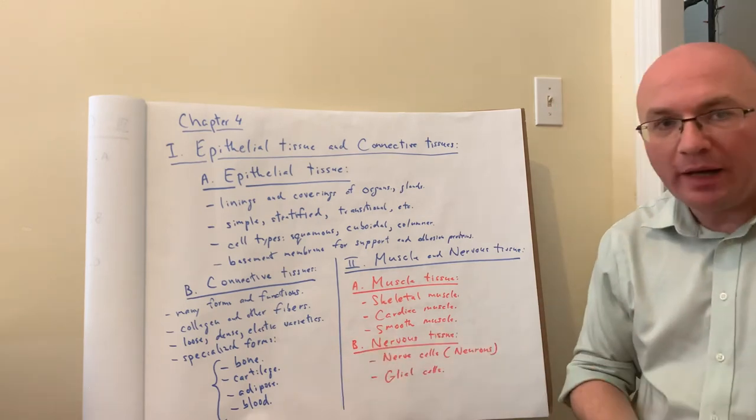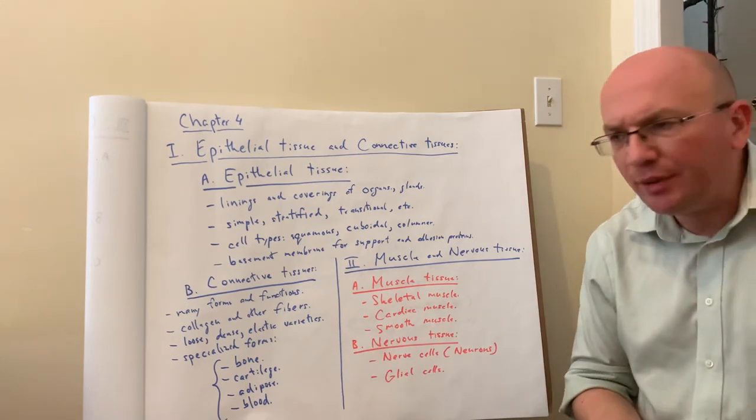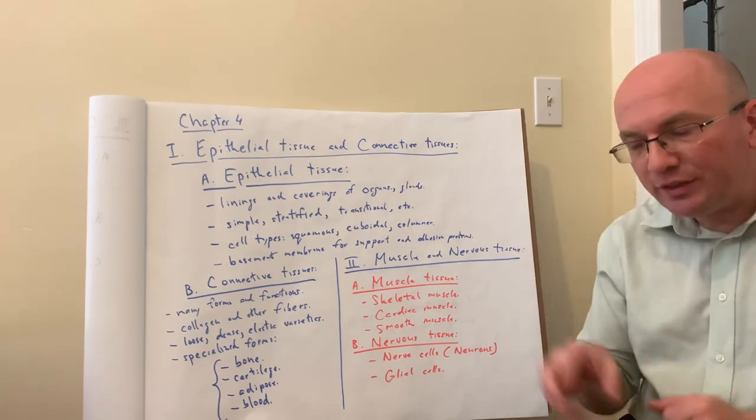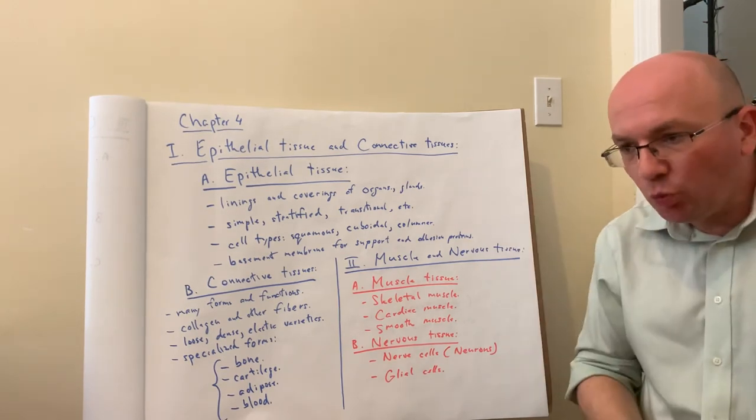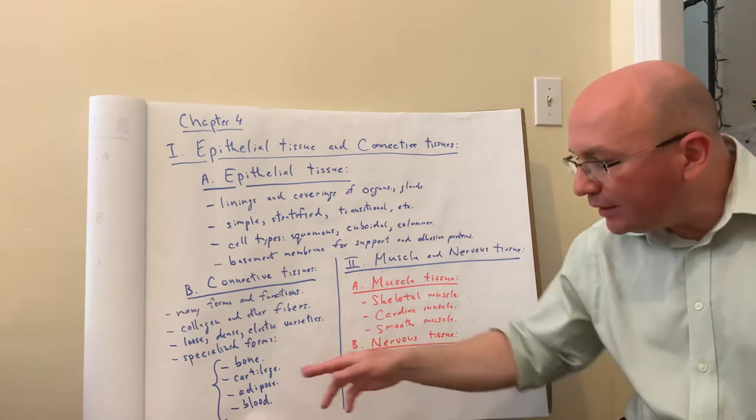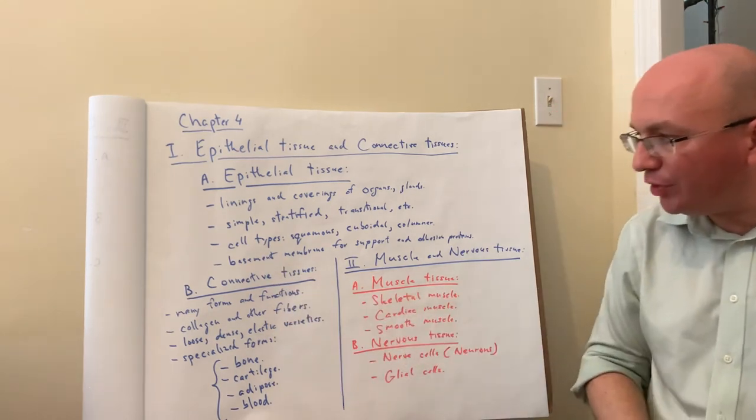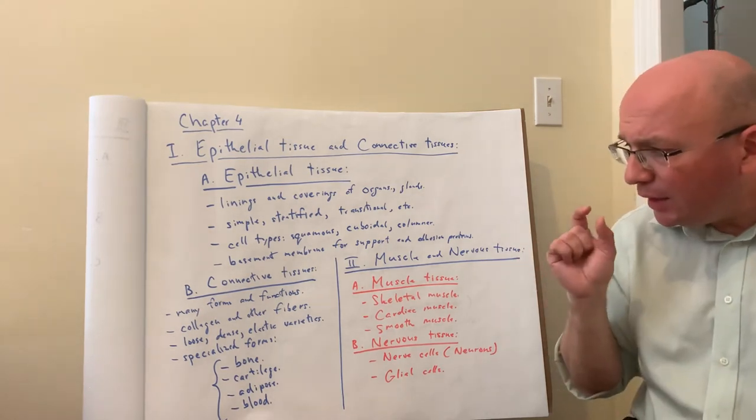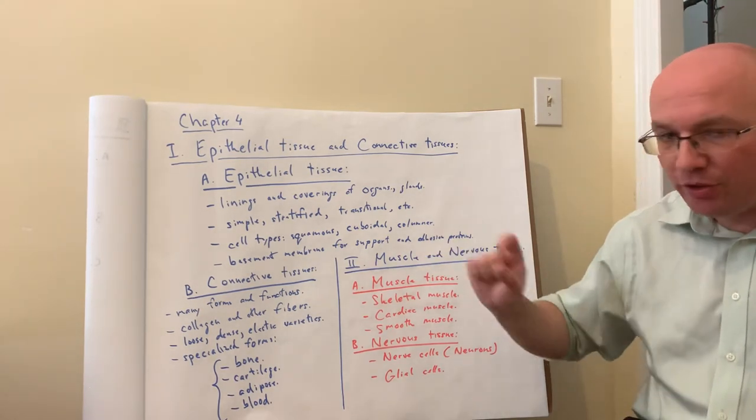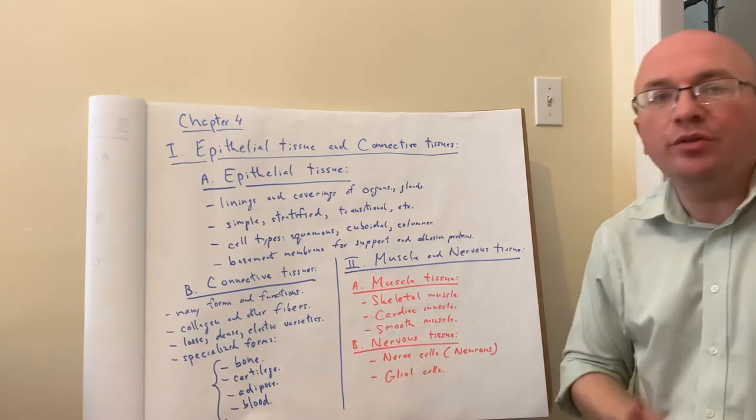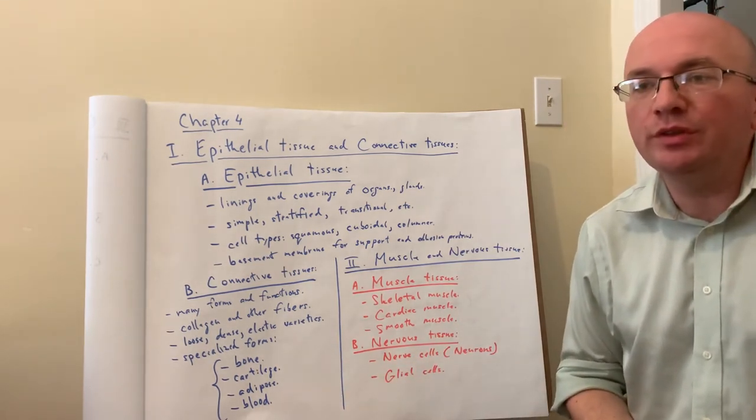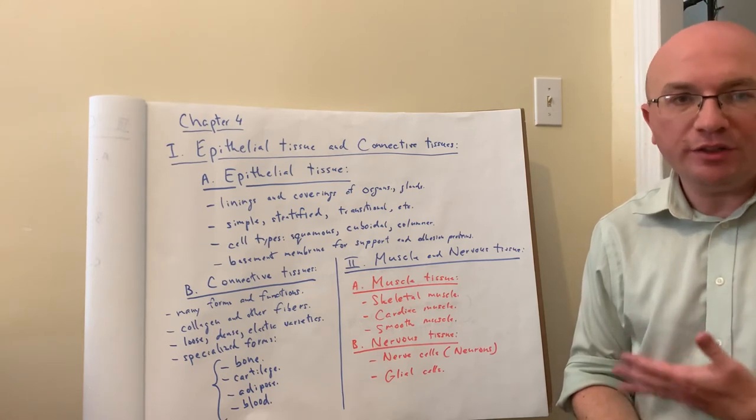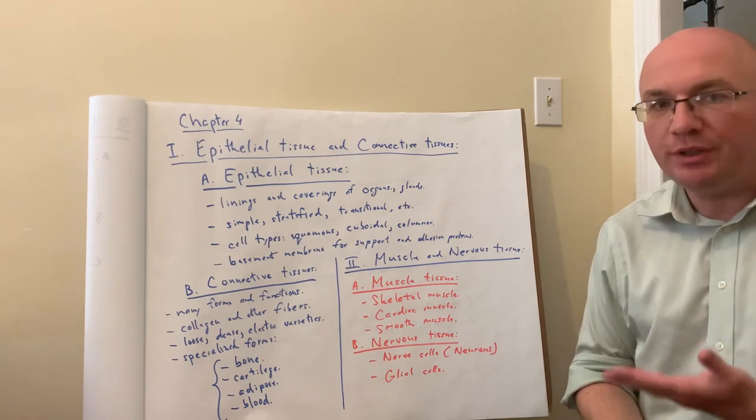Adipose tissue is the fat in the body. Adipocytes have a very unique appearance on slides with outlines of cells because the lipid gets washed out when you prepare a slide. Blood, with red blood cells, white blood cells, and other components that carry oxygen and nutrients throughout the body in the circulatory system, also happens to be connective tissue. We will come back to all of this later in the semester.